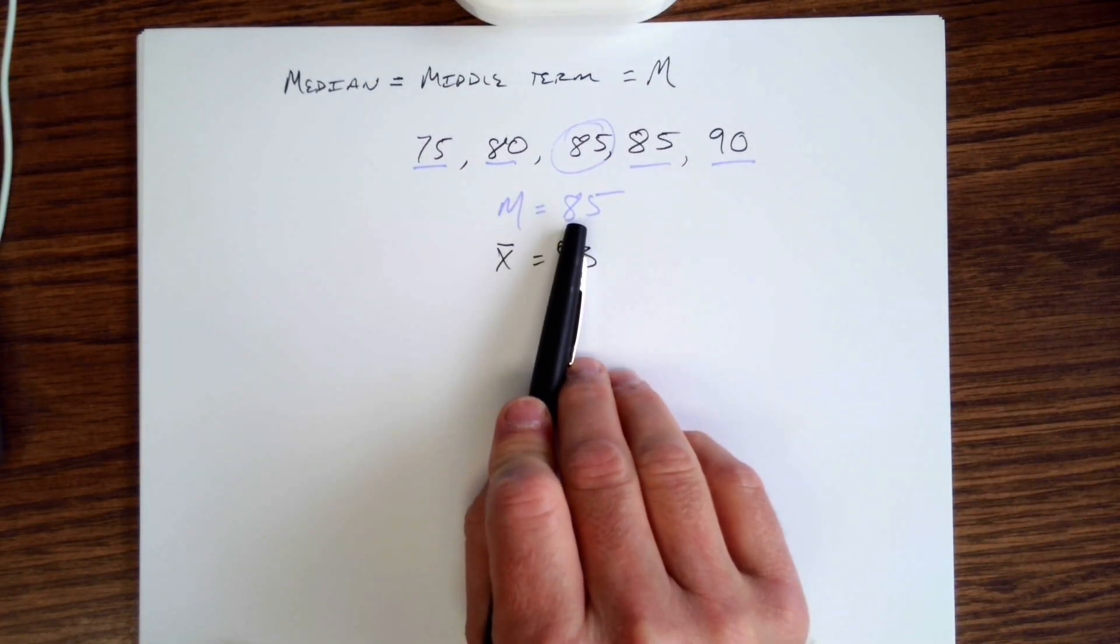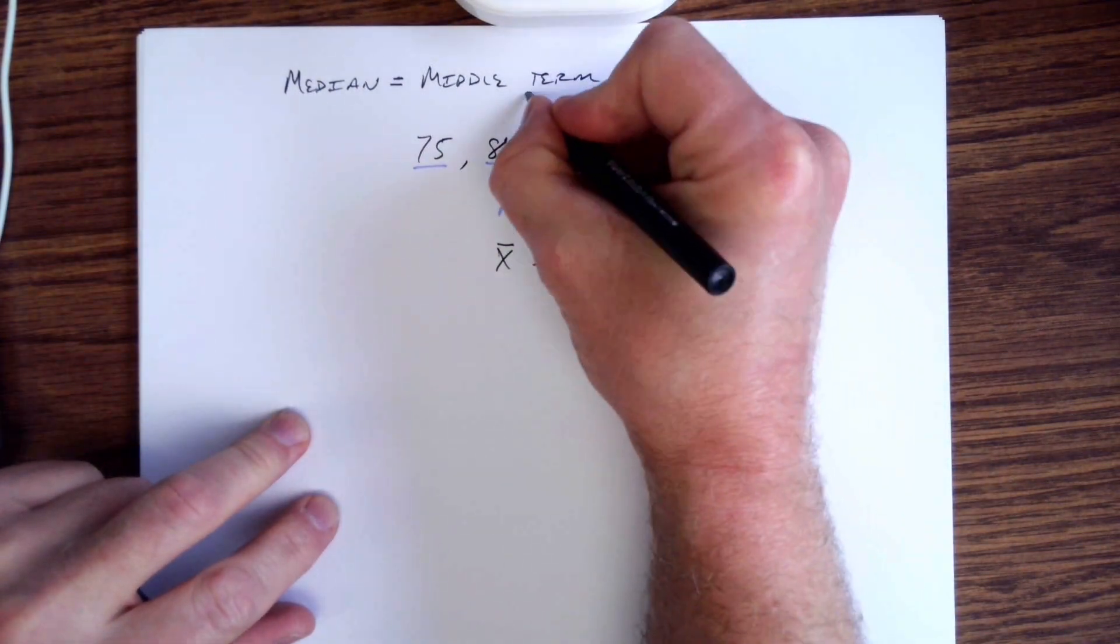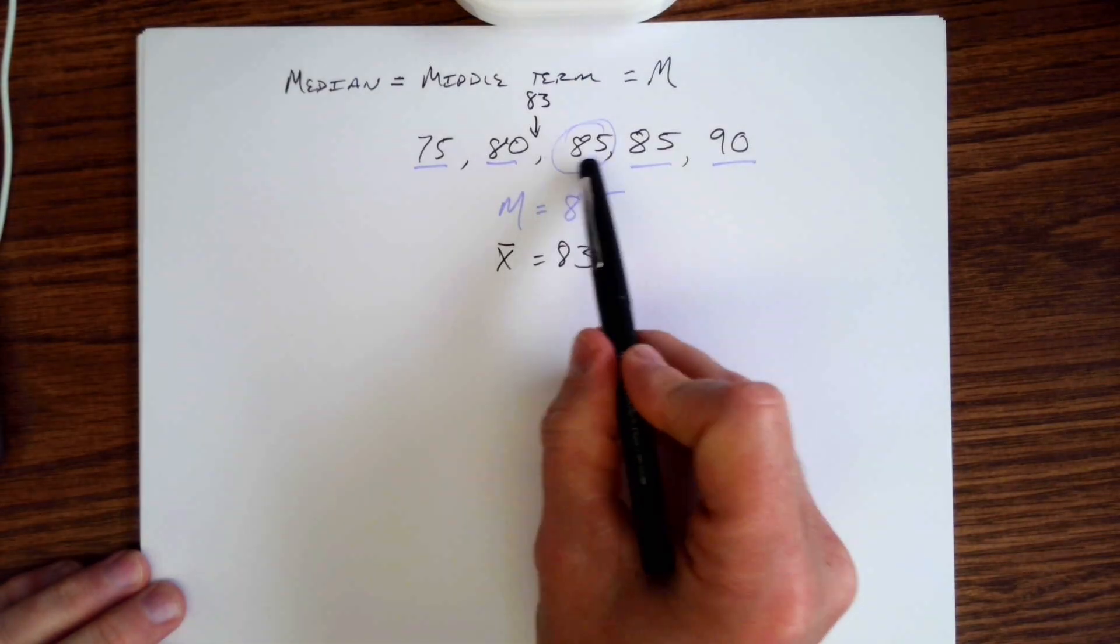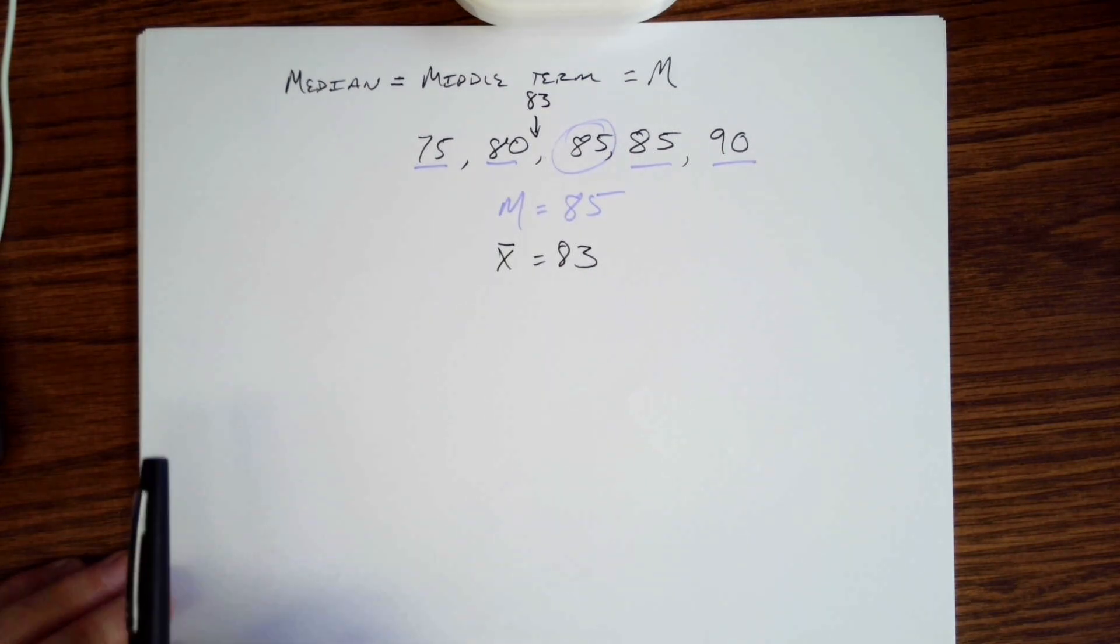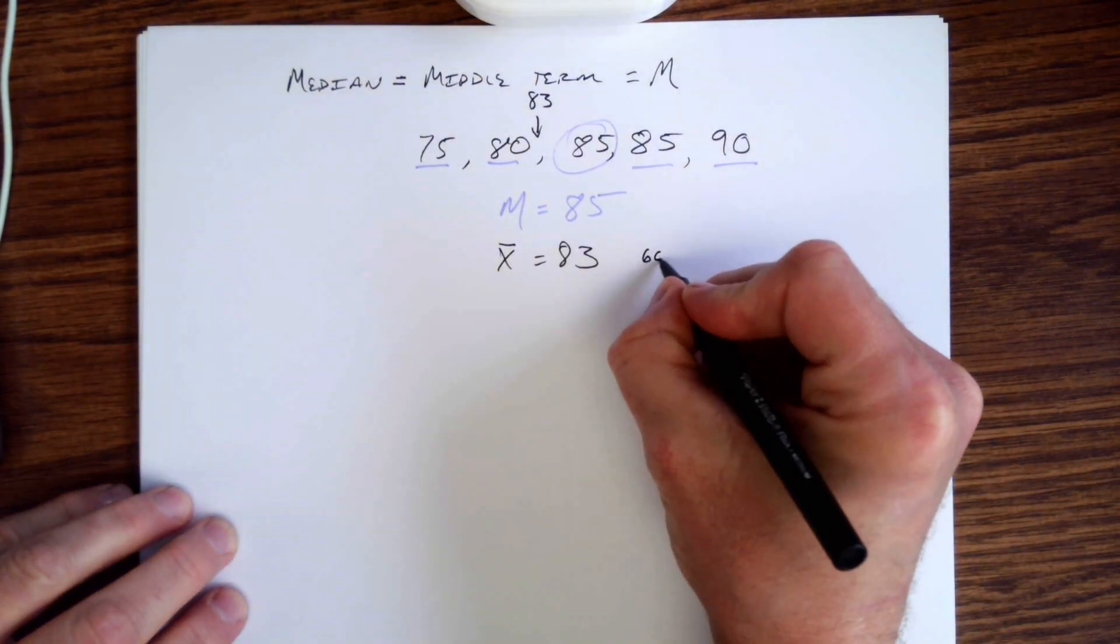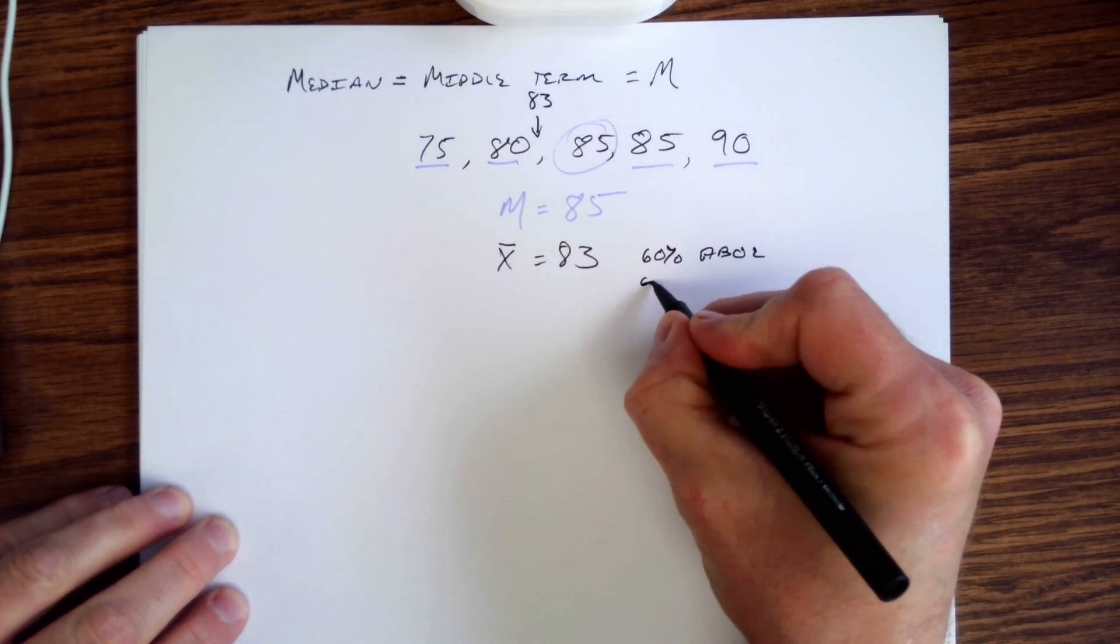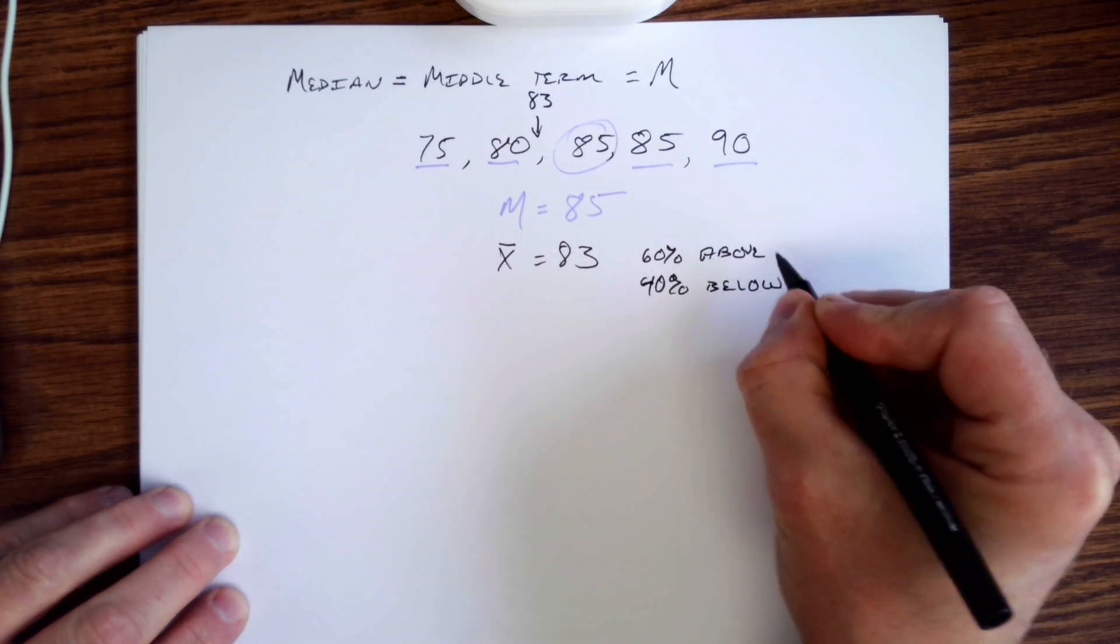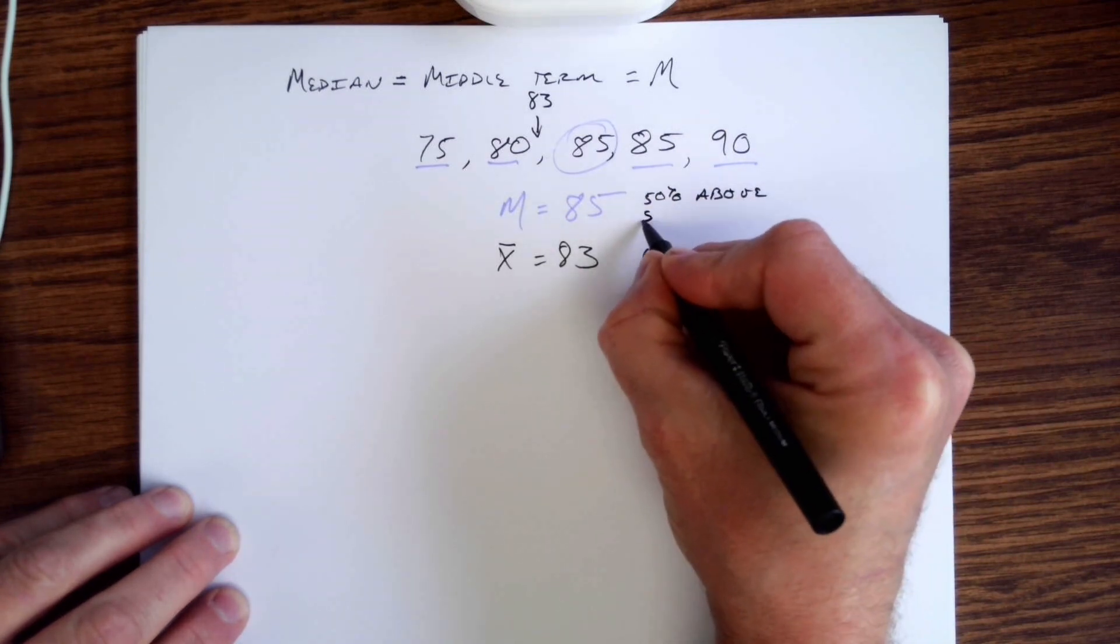In terms of what these data points tell you: this tells you that half the data is above this and half the data is below that. 83—look where 83 would be—you would be right here. More than half the data is above that, so you get three-fifths of the data is above it and two-fifths of the data is below that. So you get 60% above and 40% below here. It's 50% above and 50% below.